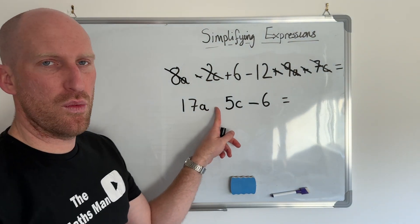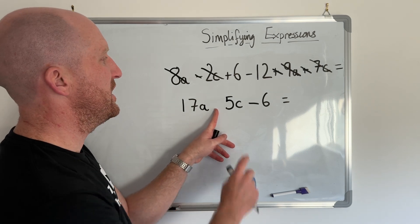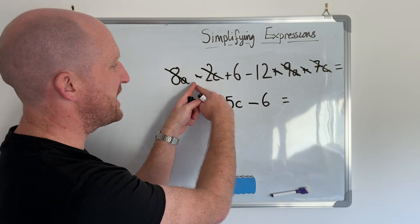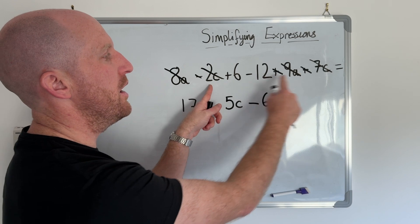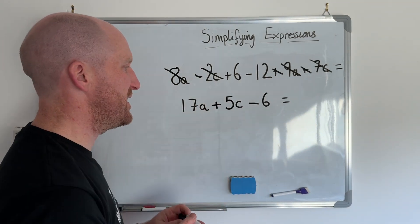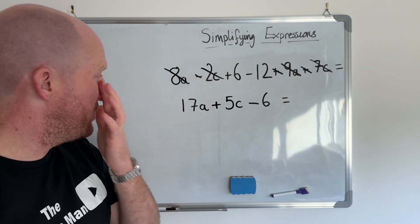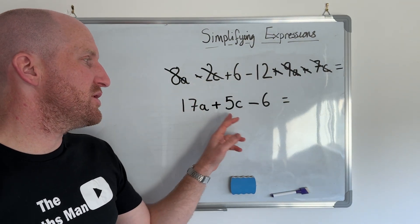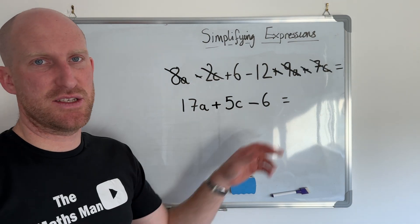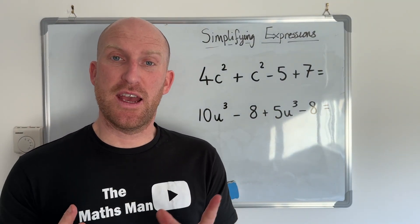Now to decide what operation goes in here, I'm going to have to go back a step because I missed it. So I had 5c. So I had negative 2c and then I added 7c. So I've now gone to a positive 5c. So that expression simplified is 17a plus 5c take away 6.